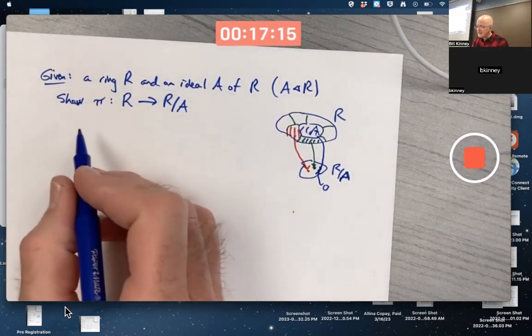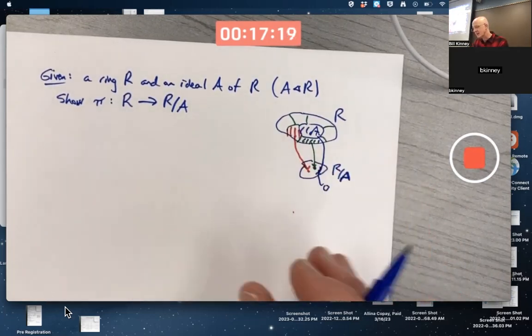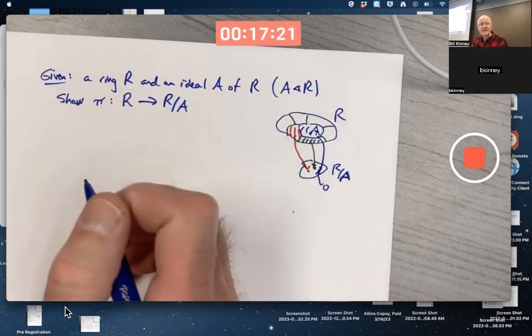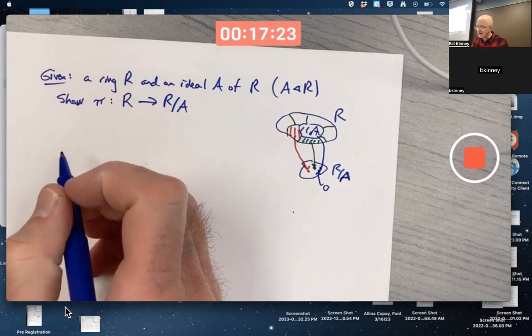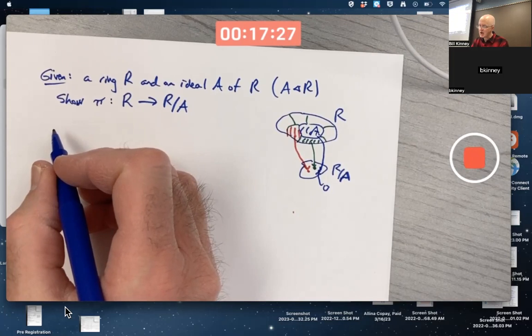Anyway, we're going to show this is kind of like a projection. You're projecting something bigger into something smaller. That's the origin of using the letter pi here. It has nothing to do with the number pi, just that pi starts with P, just like projection starts with P.